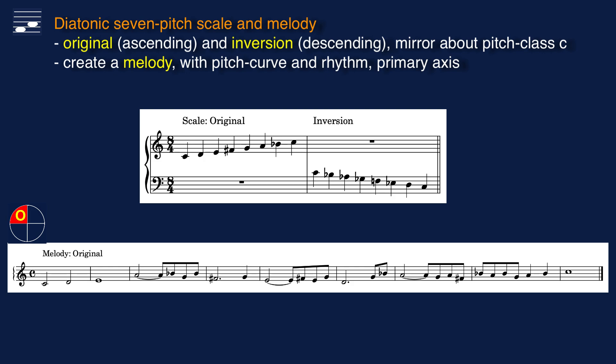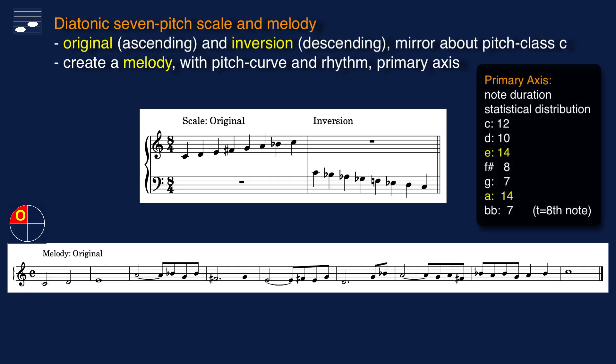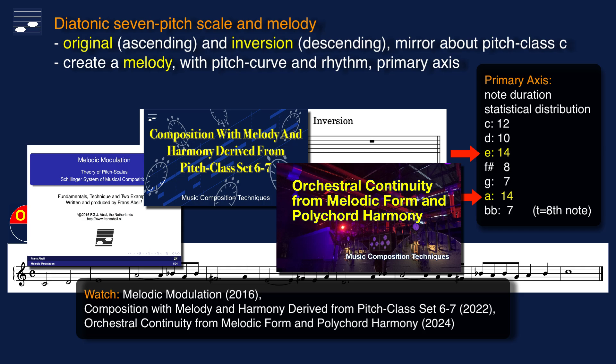Not all pitch classes are equally important. I already mentioned the tonic degree pitch C. Another characteristic is the primary axis — the maximum in the statistical distribution of melody note durations. Here you see the result, which has a maximum cumulative duration for pitch classes E and A, with the tonic degree C coming second. Learn what the primary axis is and how it affects the perception of melody in this set of tutorials.